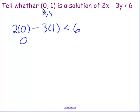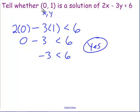2 times 0 is 0, 3 times 1 is 3, and I have 0 minus 3 is less than 6, and I think we all know that 0 minus 3 is negative 3. And negative 3 is in fact less than 6. So yes, that ordered pair is a solution of the inequality.